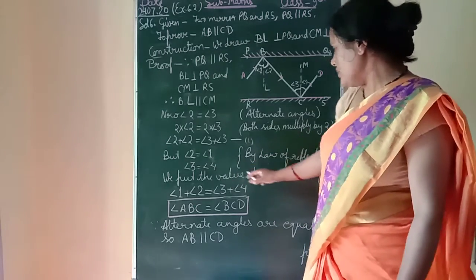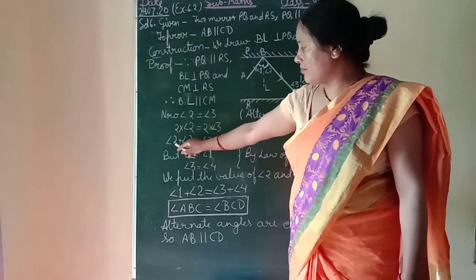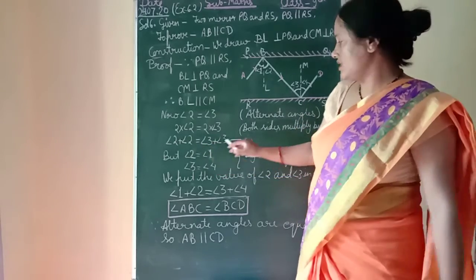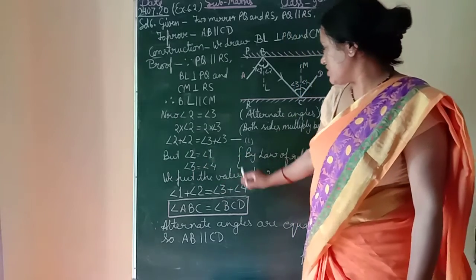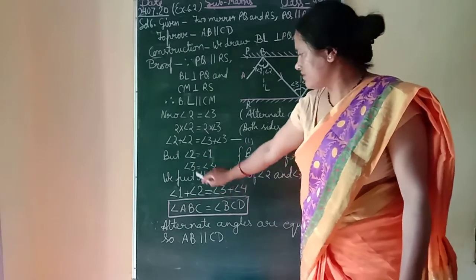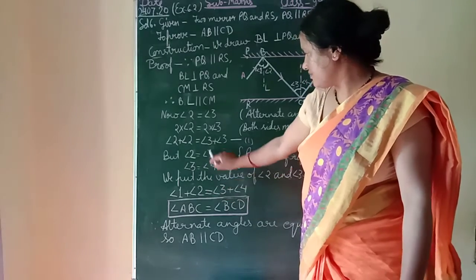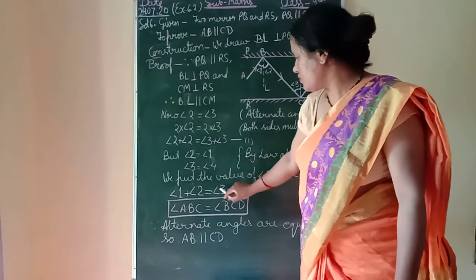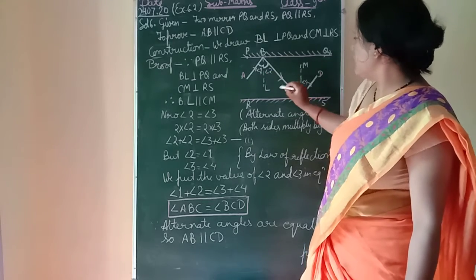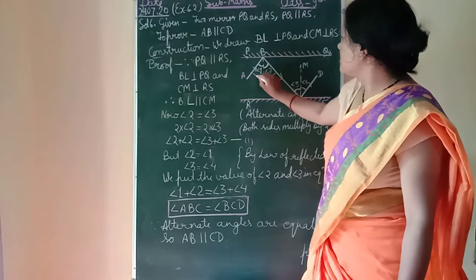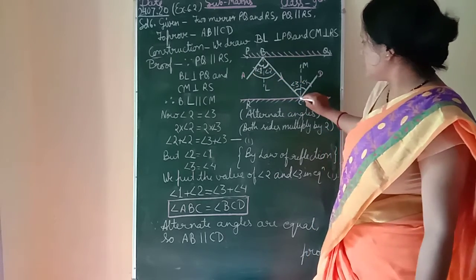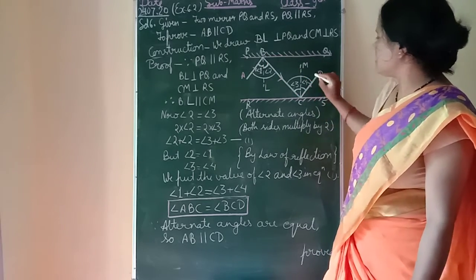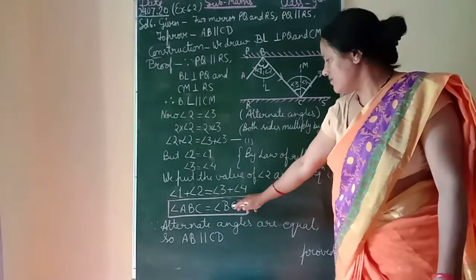Now we substitute into equation 1: replacing one angle 2 with angle 1, and one angle 3 with angle 4, we get angle 1 + angle 2 = angle 3 + angle 4. Angle 1 + angle 2 is angle ABC, and angle 3 + angle 4 is angle BCD. Therefore, angle ABC equals angle BCD.